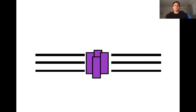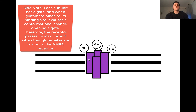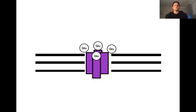Each of these binding sites is coupled to a gate. So when a glutamate binds to its binding site, it will cause a gate inside the receptor to open, allowing current to pass through. The maximum amount of current that can pass through this receptor occurs when all four glutamates are bound — one to each subunit — so the channel will be maximally open, passing the maximum amount of current.